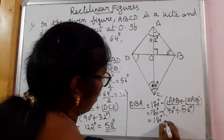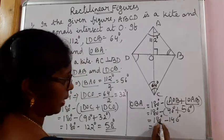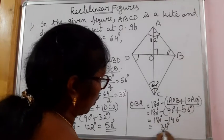That is 180 degrees minus 146 degrees. You will get 34 degrees.